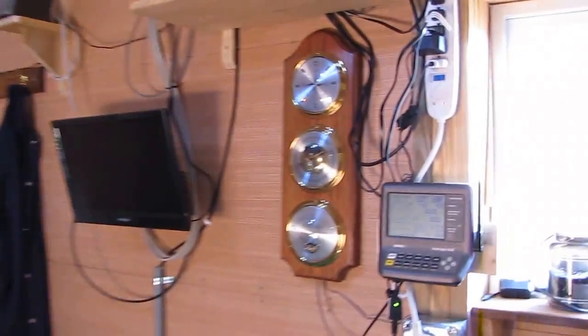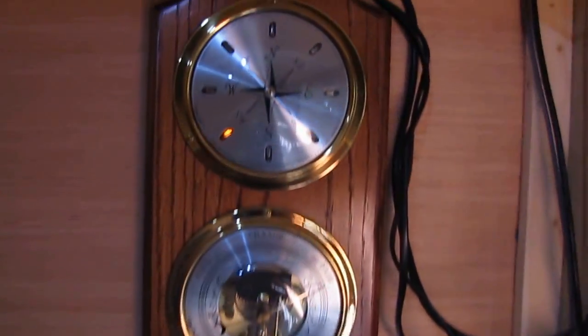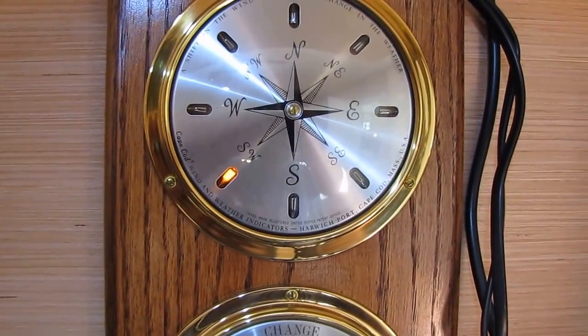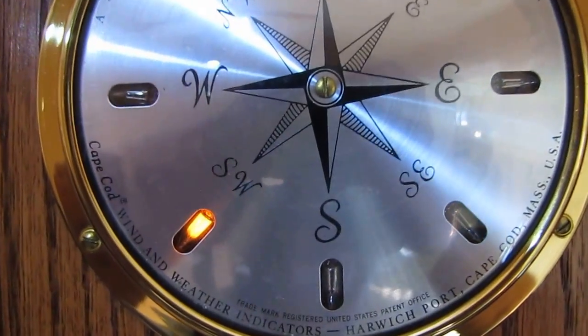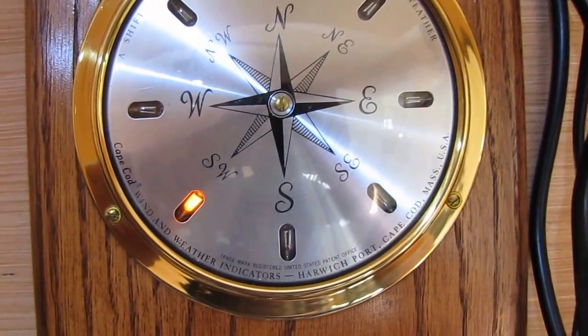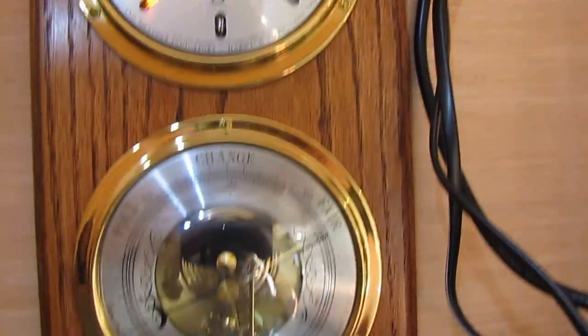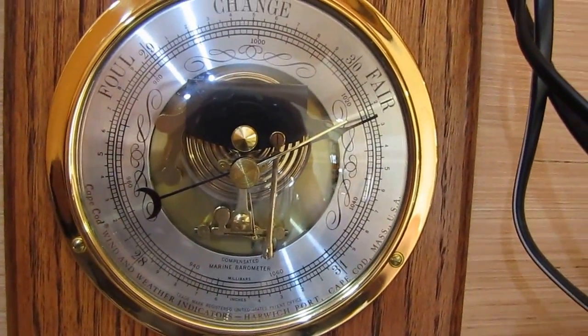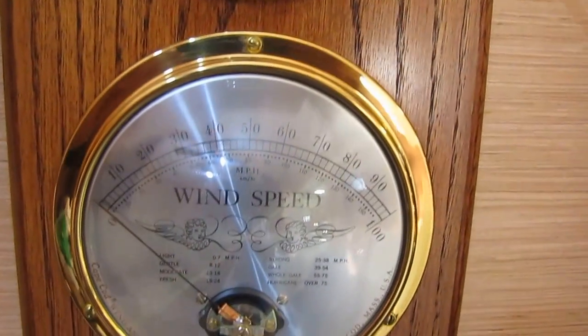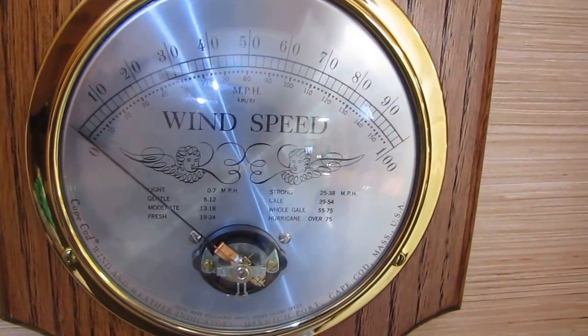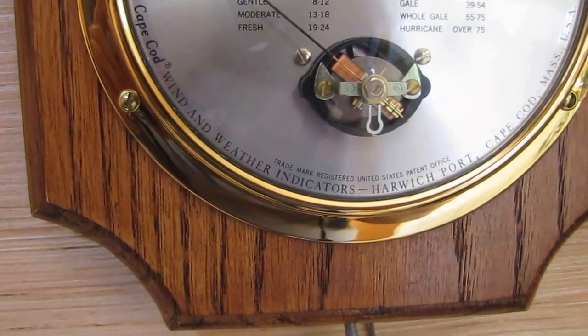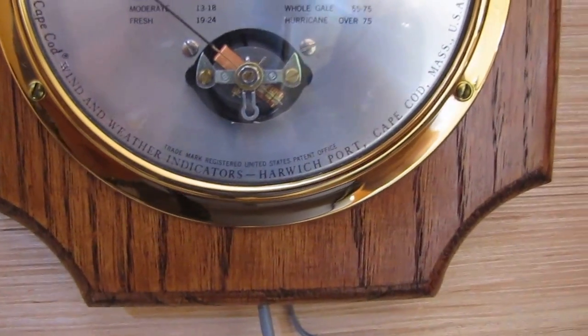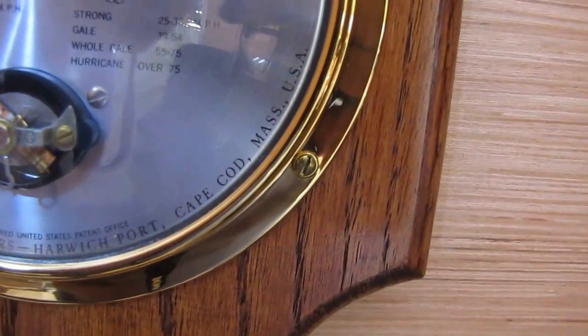But yeah, this is an all day project. I started this morning about nine o'clock. But here she is. She is lit up. The wind is out of the southwest. Let's see if you see the southwest. And that's the wind direction. That is, and here's the barometer. And then here is the wind speed. Cape Cod wind and weather indicators. Harwich Port, Cape Cod, Massachusetts. U.S.A.